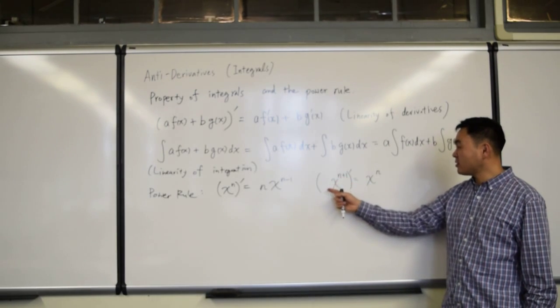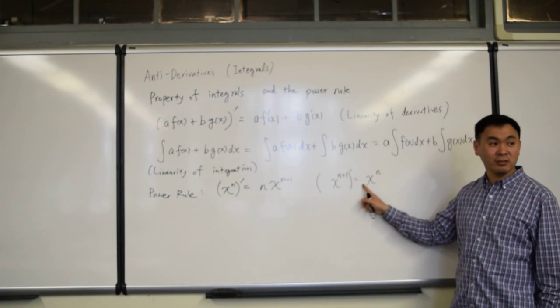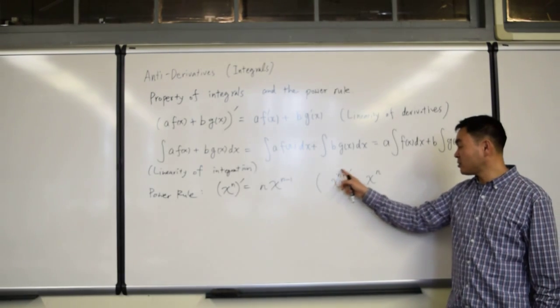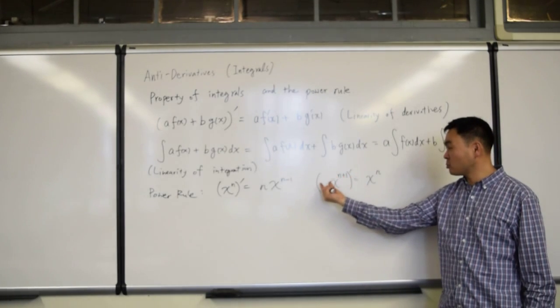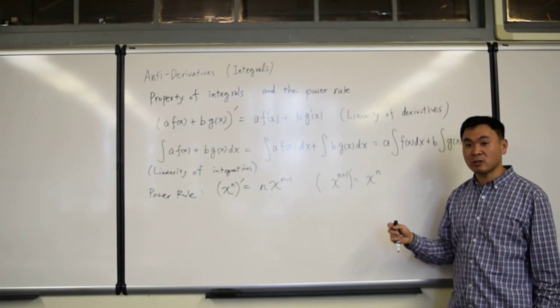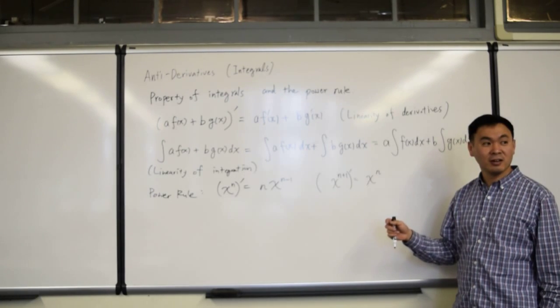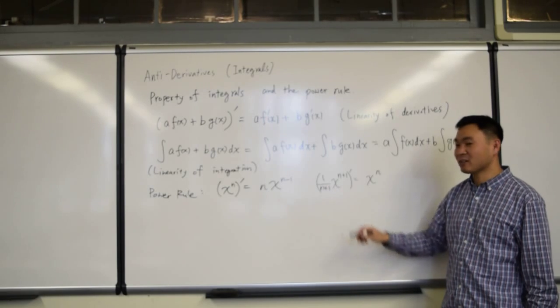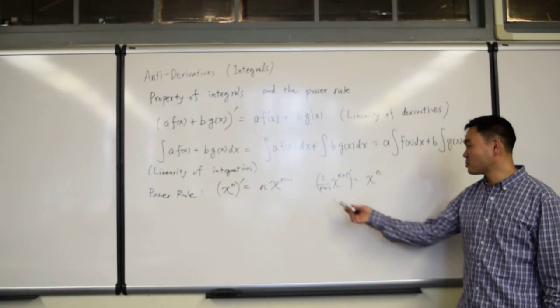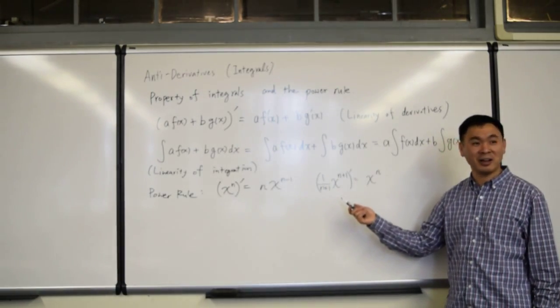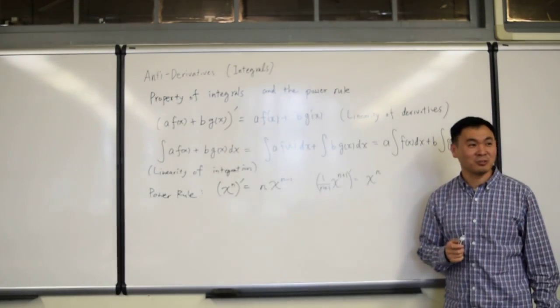Now, if you just differentiated this, what are you going to get in front? If you just differentiate this, n plus one will step down in front, and you're going to get n. But we don't want that, so what do we do? One over n plus one. For the preemptive strike. Just put it right there, so that when it steps down, it's going to cancel, it's going to go away, and then you get x to the n.